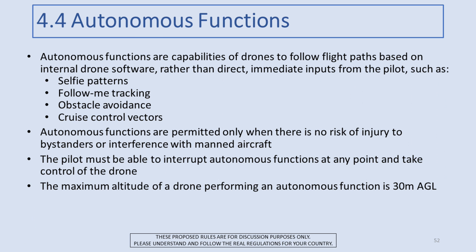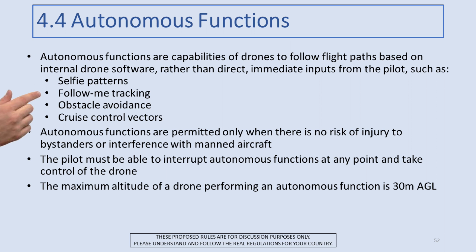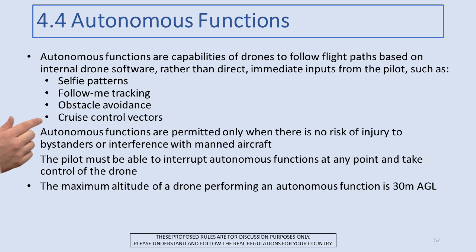Section 4.4 covers autonomous functions — capabilities of drones to follow flight paths based on internal drone software rather than direct pilot inputs. These include selfie patterns, follow-me tracking, obstacle avoidance, and cruise control vectors where you set a direction and altitude while you do camera work. Autonomous functions are permitted only when there is no risk of injury to bystanders or interference with manned aircraft.